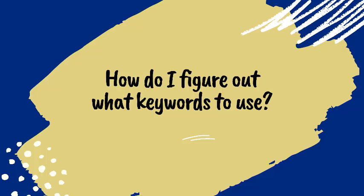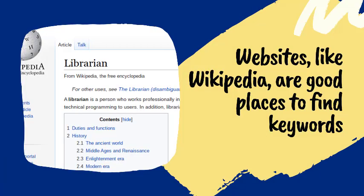So how do I come up with keywords to use in the databases to find information? You might have a lot of knowledge about your topic and can think of a few keywords off the top of your head. If you are not familiar with your topic, you can find keywords in sources like your textbooks, Wikipedia articles, websites, and other research articles, to name a few.